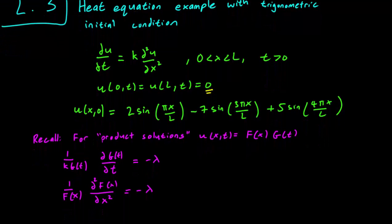Recall that for product solutions, solutions of the form u = f(x)g(t) where f is purely a function of x and g is purely a function of t, we can reduce it to two ordinary differential equations. The first equation, the one with respect to t, we can solve by using the separation of variables technique and we get a general solution of the form g(t) = constant times e^(-kλt).